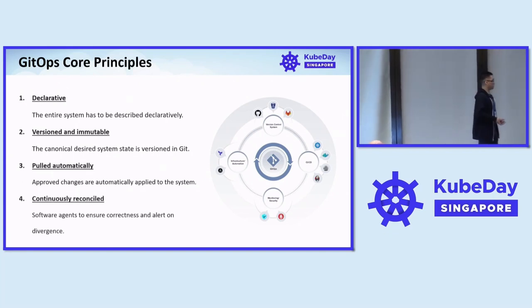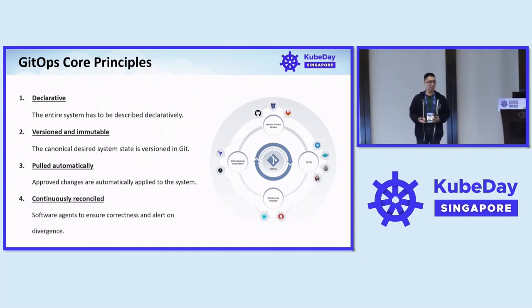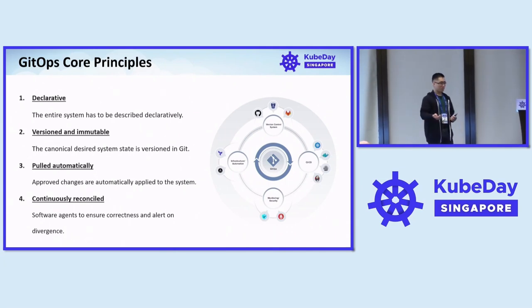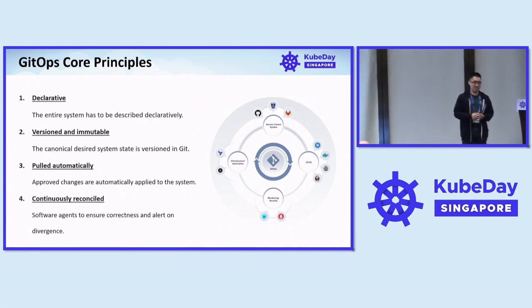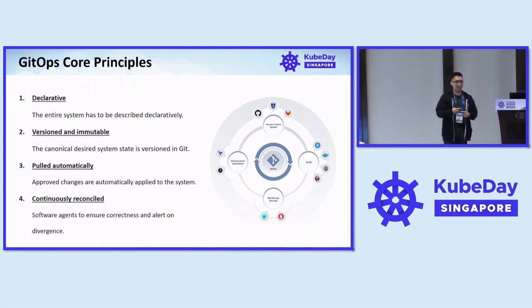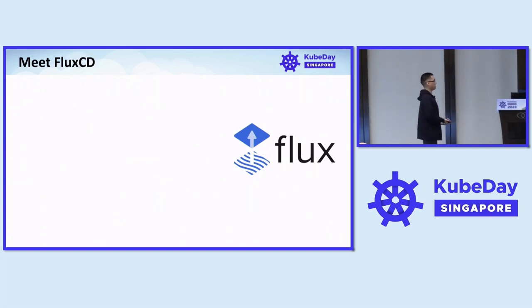And of course, continuous reconciliation — multiple software agents run continuously, detecting divergence. For example, if you change a config map to enable debug mode in production when you shouldn't, within your GitOps declaration you say debug mode should be false. After 10 minutes, reconciliation runs, finds that debug is true, reapplies the config, and reverses the change — all within 10 minutes. Ten minutes is the usual reconciliation period, but you can change it to 30 seconds if you want.